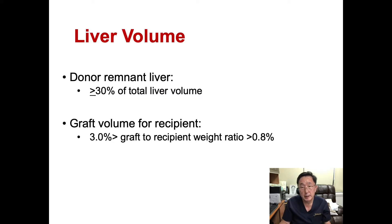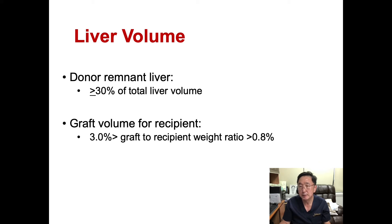In living donor hepatectomy, the liver volume is important both in donor and recipient. In the donor, the remnant liver volume should be more than 30% of the total liver volume, and at the same time in the recipient,